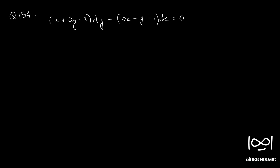Question number 154. The equation is: x plus 2y minus 3 times dy minus 2x minus y plus 1 times dx equals 0. This is the last question from this section; we will take up a new section from the next question onwards. Writing dy by dx from the given equation, dy by dx equals 2x minus y plus 1 divided by x plus 2y minus 3.